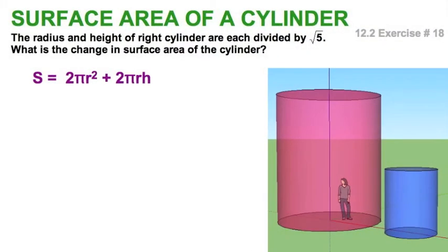Here's an interesting hypothetical question. I'm going to take this red cylinder and divide both the height and its radius by √5. I get the blue cylinder. I made them to scale for you. But let's do the math and see how much smaller is the blue one than the red.